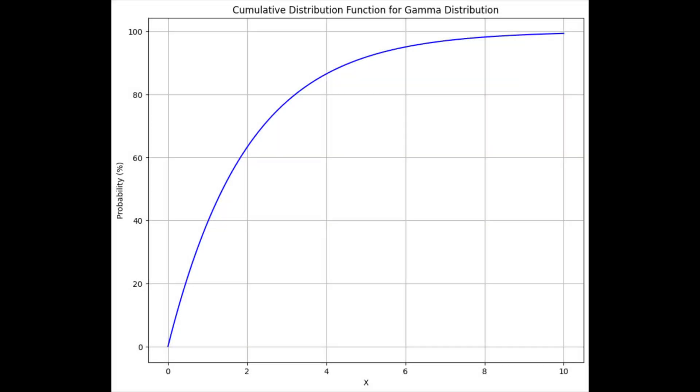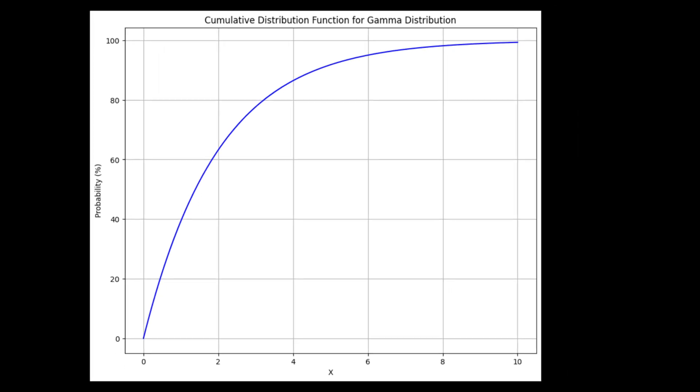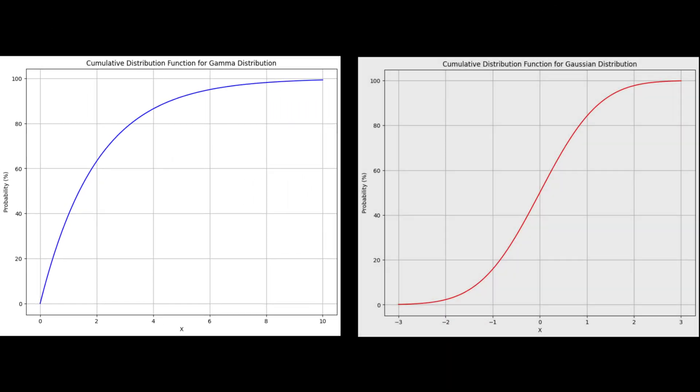The CDF of a gamma distribution will also look different than a Gaussian distribution as it starts with a steep slope near zero, ascends to the highest probability values, and gradually declines to 100%.